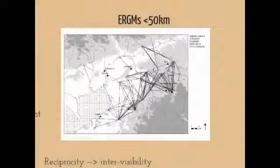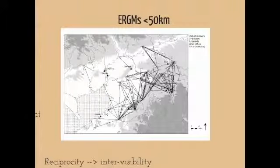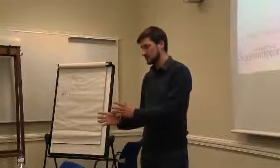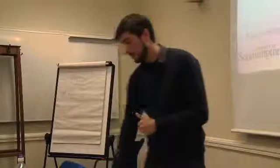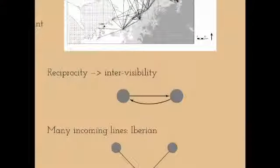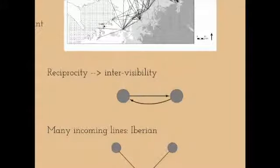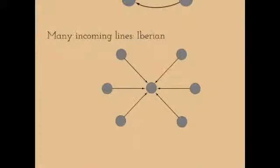For the 50-kilometre networks, the models were very hard to fit and the results aren't very encouraging, again emphasising that the 20-kilometre and 50-kilometre distance networks need to be addressed in different ways — they have different roles in structuring possible communications or interactions between past communities. We do again see a strong tendency towards reciprocation of lines of sight throughout all periods, and for the Iron Age a tendency for sites to be visually prominent.